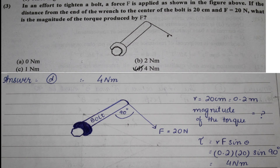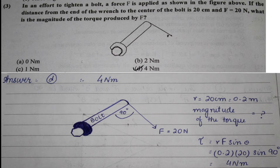Next question: in an effort to tighten a bolt, a force F is applied as shown in the figure. The distance from the end of the wrench to the center of the bolt is 20 cm, and force F equals 20 N. We need to find the magnitude of the torque produced by F using the formula τ equals r·F·sin θ. Here r is 20 cm, converted to 0.2 meters, F is 20 N, and θ is 90 degrees as shown in the diagram.